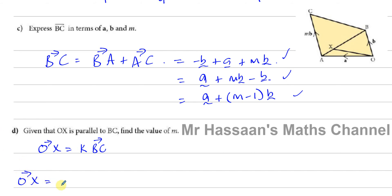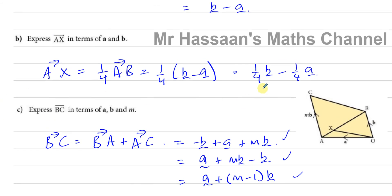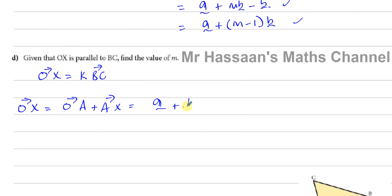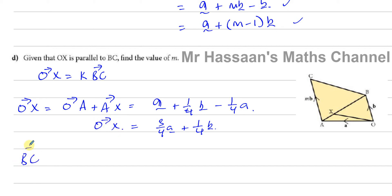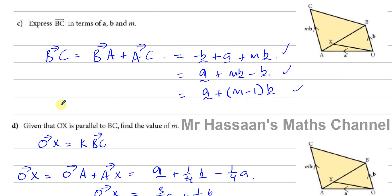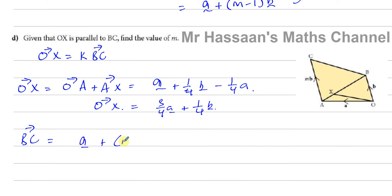OX equals OA plus AX. OA is vector a, and AX we already found as one quarter b minus one quarter a. So OX equals a plus one quarter b minus one quarter a. Combining the a terms: OX equals three quarters a plus one quarter b. And BC from the previous part is a plus (M minus 1)b.